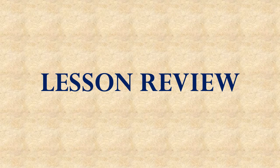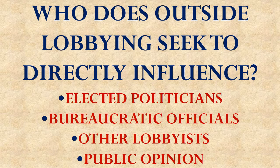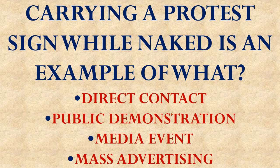Now let's review what you've learned. Who does outside lobbying seek to directly influence? Is it elected politicians, bureaucratic officials, other lobbyists, or public opinion? Carrying a protest sign while naked is an example of what kind of outside lobbying method? Is it direct contact, a public demonstration, a media event, or mass advertising? What is grassroots politics — is it politics that rolls over the opposition, is it led by politicians, is it initiated by interest groups, or does it rise up from the people?